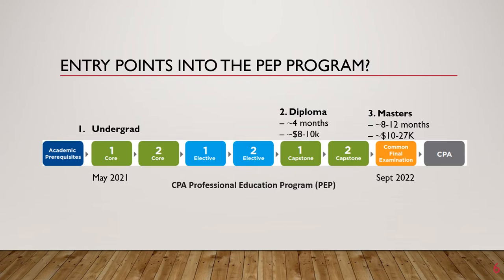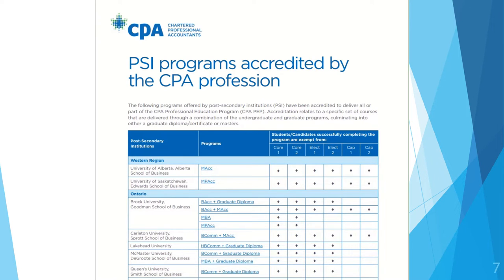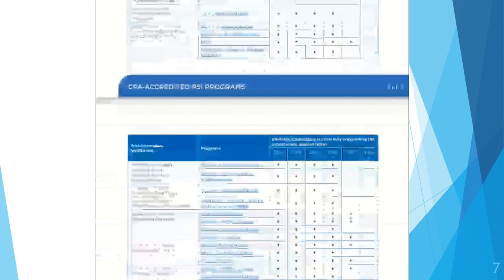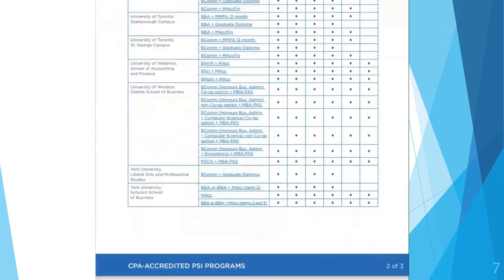Each Core, Elective, and Capstone module takes approximately 8 weeks to complete. For example, if you started in May 2021, you would expect to write your common final exam in September 2022. CPA has provided a document to help determine where you will enter the PEP program after you complete your undergrad, diploma, or master's degree — a link will be in the description below. On this document, you will see various schools and programs listed and where you will enter the PEP program if you complete them.